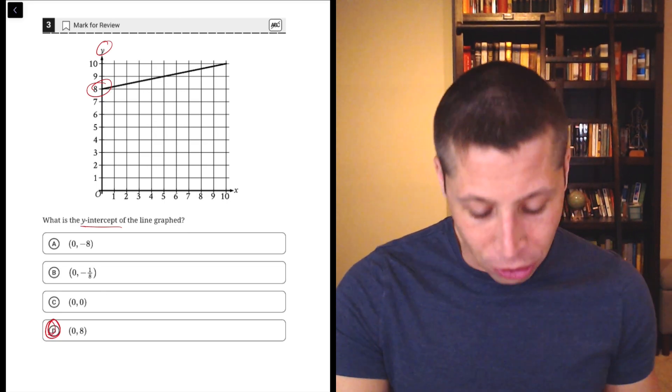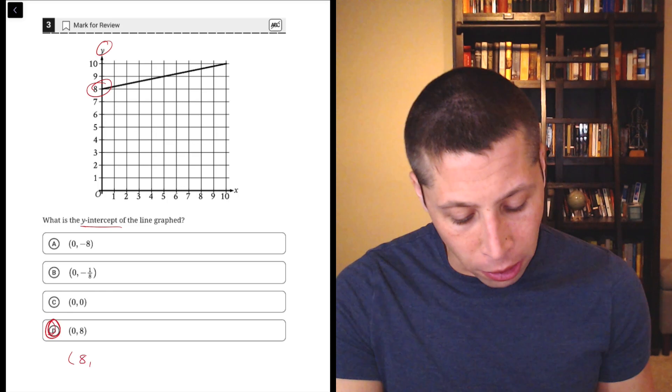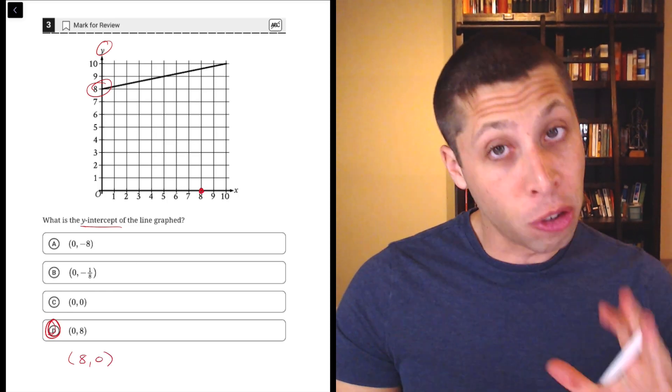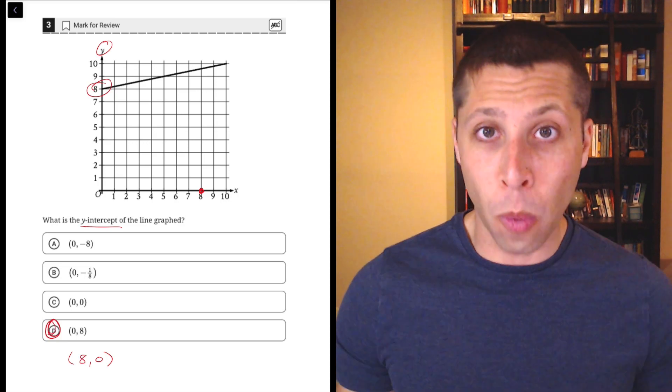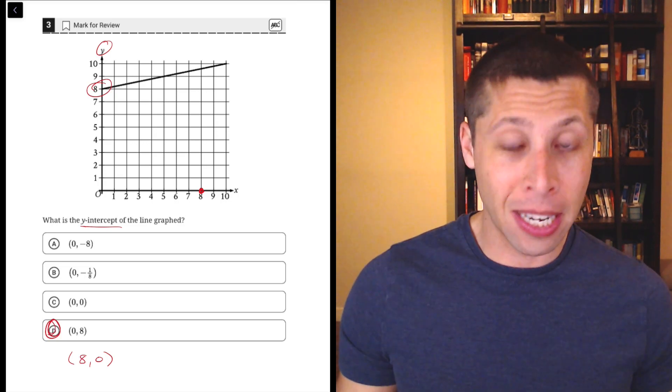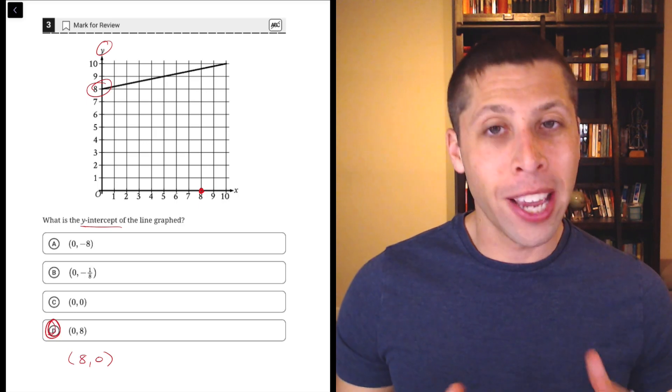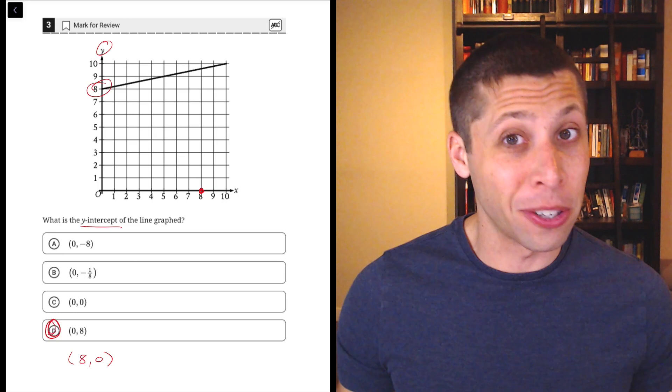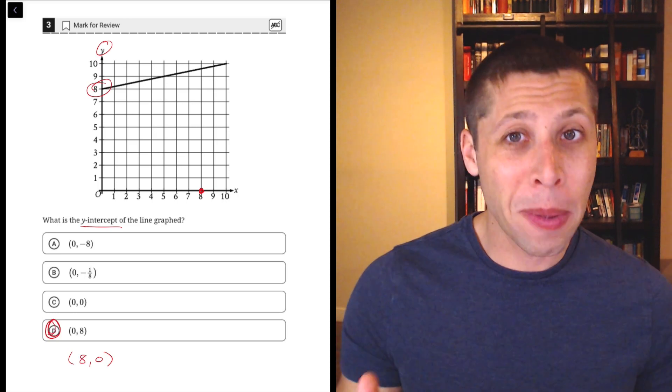But on harder versions of this question, they might also include the reverse, eight, zero, which is actually the point down here. So just be careful that we don't confuse x and y. Maybe you're just new to algebra or the xy plane, but I will say that confusing x and y is one of those traps that the SAT sets in a lot of different types of questions. You've got to be able to separate them.